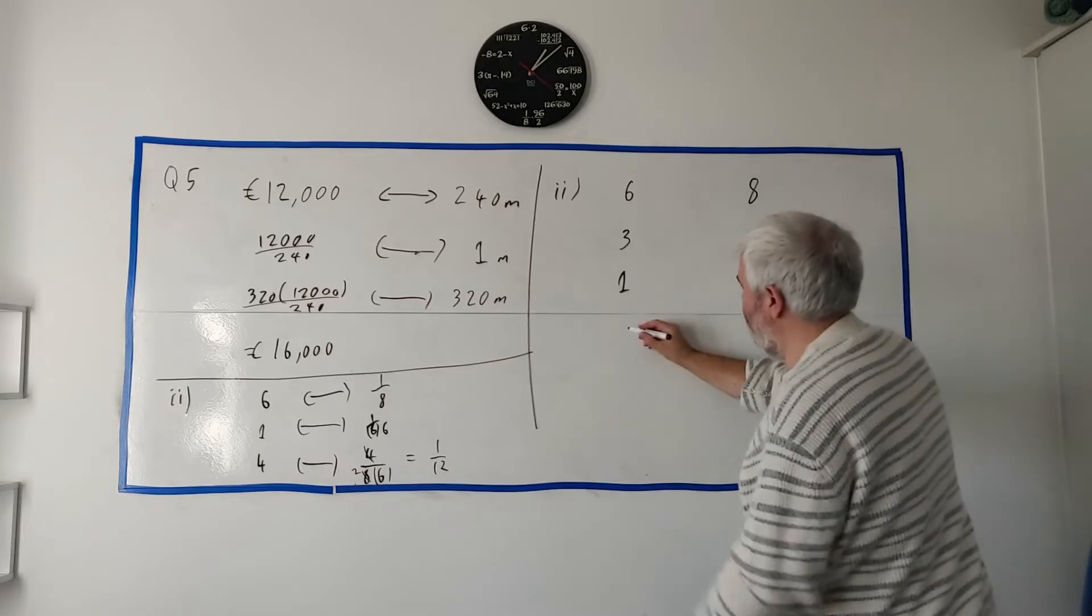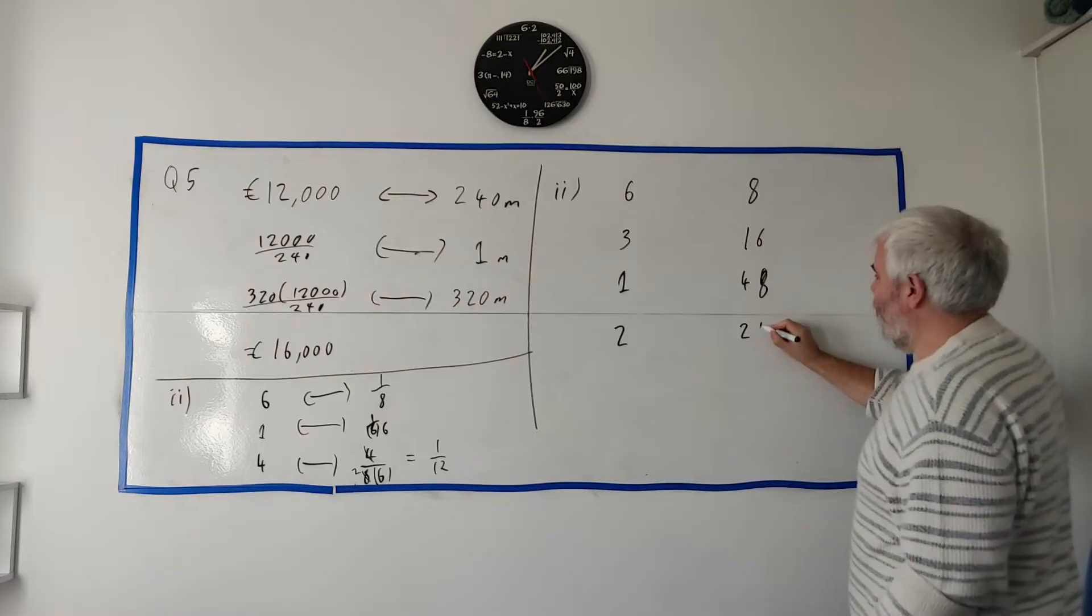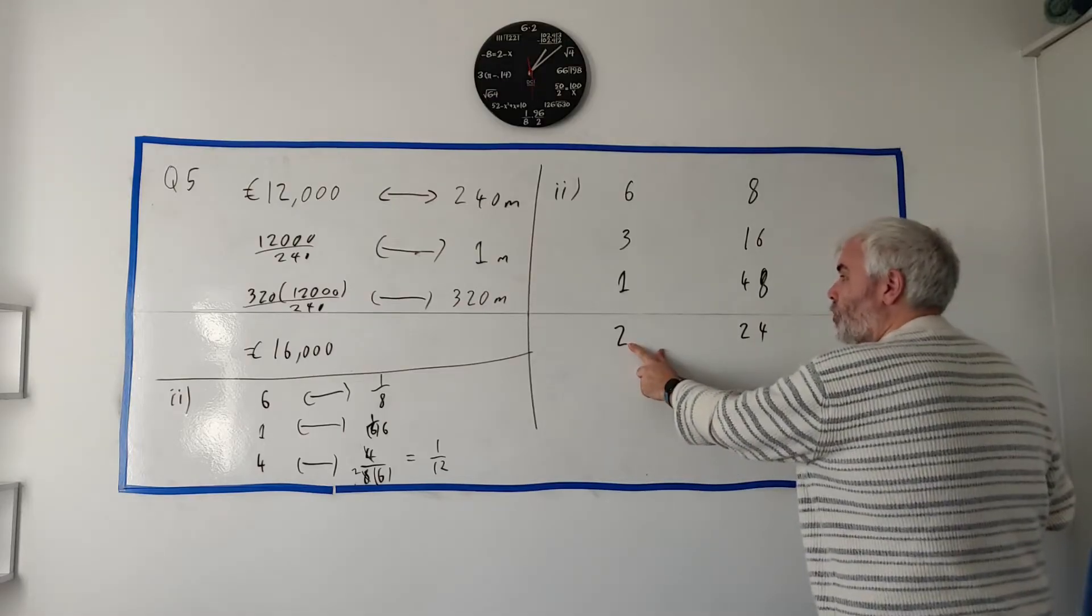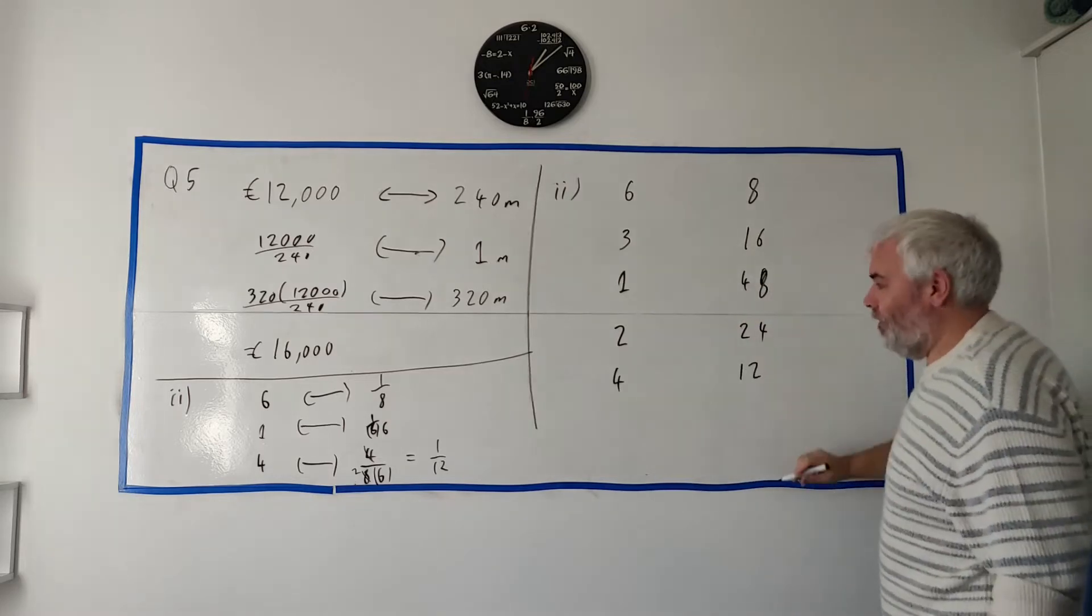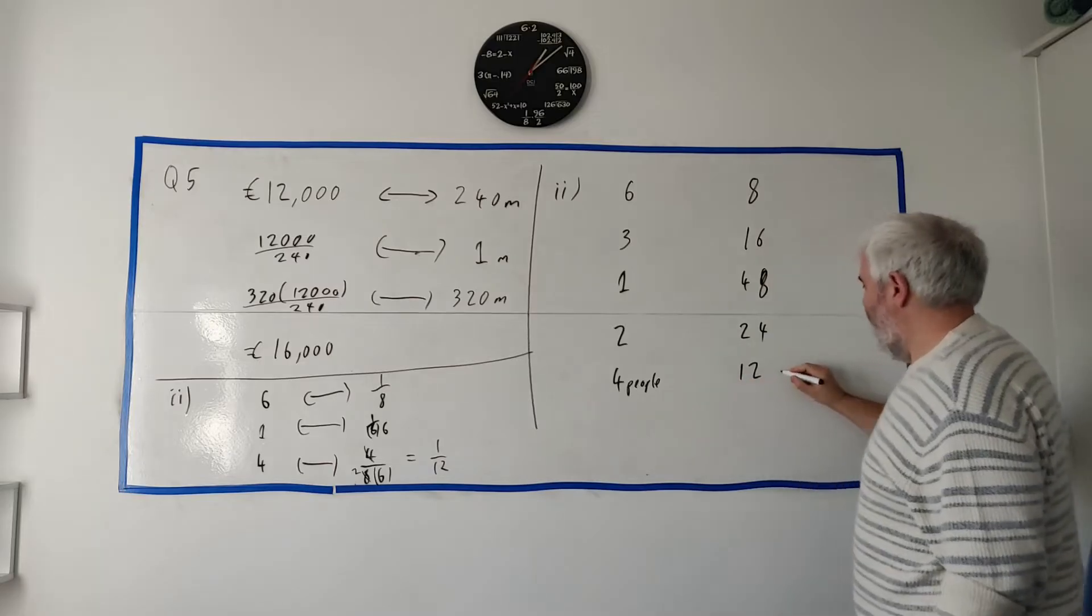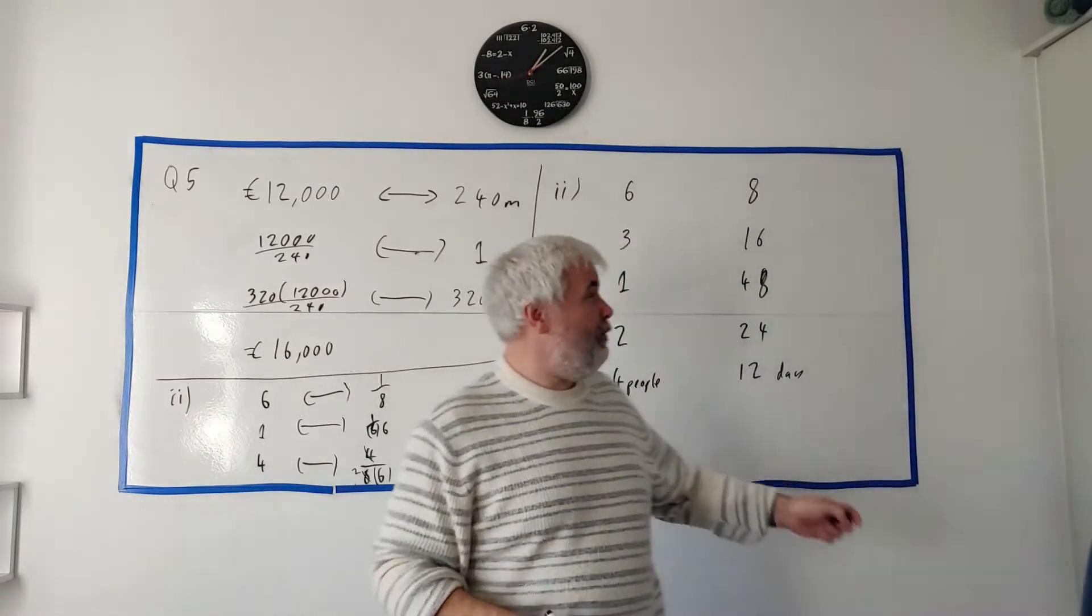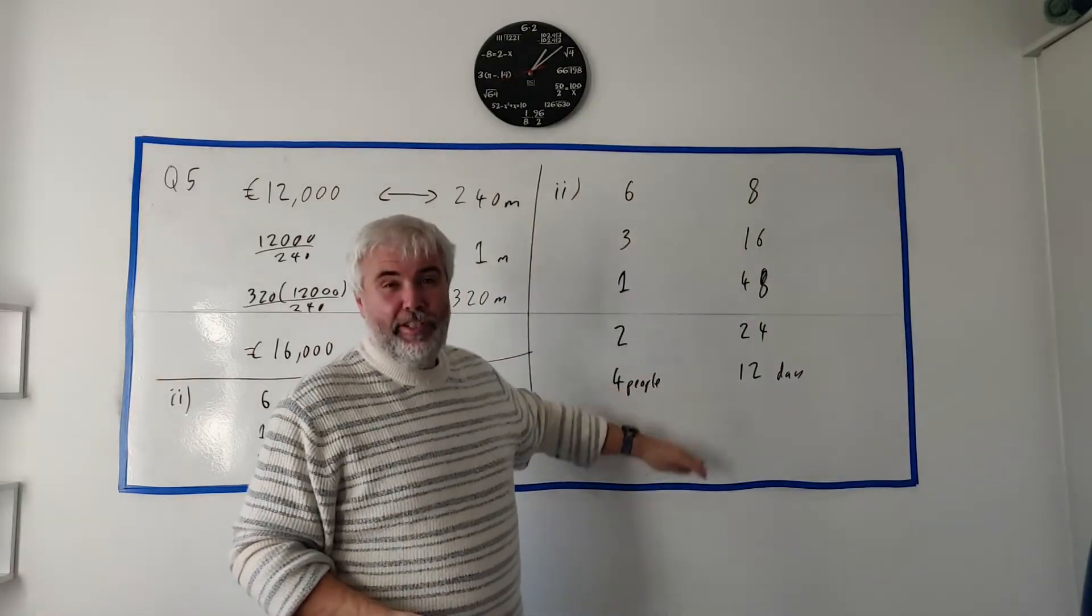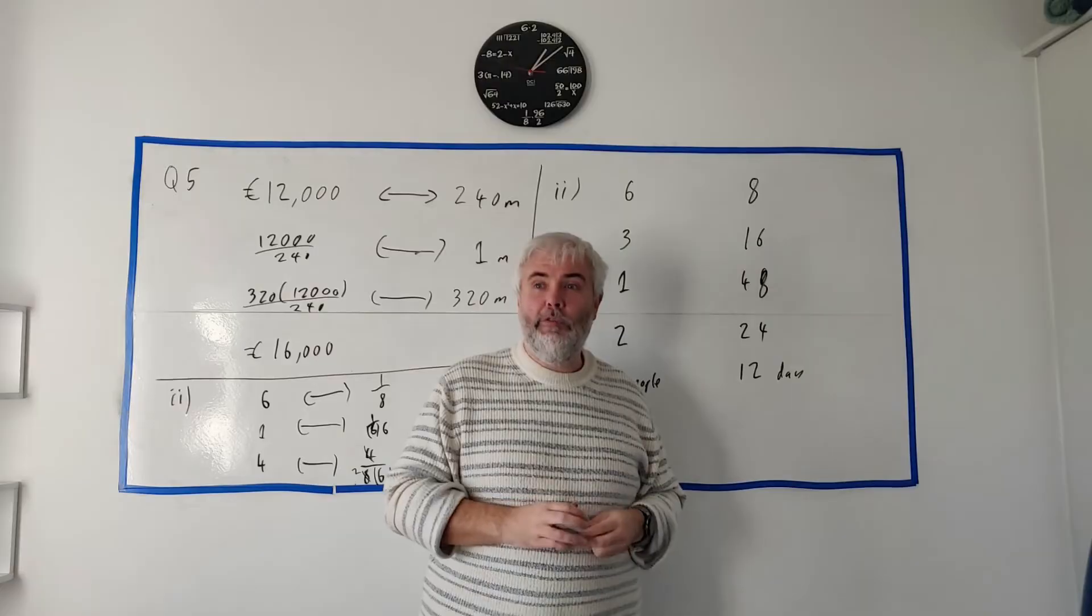I'd just stay playing around with this. What if one person was working? It should take three times more time - 48 days. And then four people - let's go to two people. Twice the people should take half the time, 24 days. And then we're trying to get to four, so twice again should be 12 days. Four people should take 12 days to do the job. Same answer as I got here. I think most students will have understood this a little better.